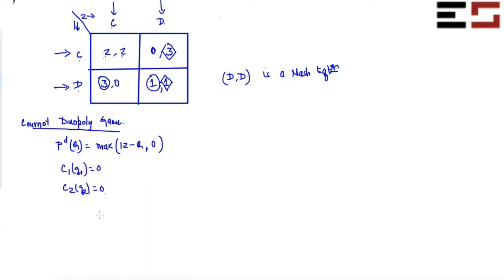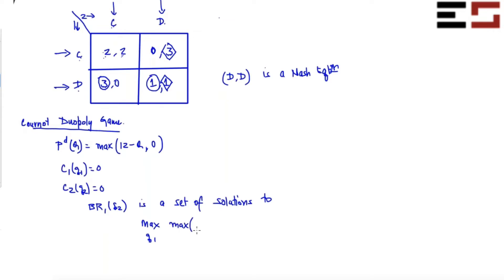Recall that in order to find the best response function BR1(Q2), it is a set of solutions to this problem: maximize with respect to Q1 the profit of firm one. The profit of firm one is max(12 minus Q1 minus Q2, 0) times the quantity, minus the cost which is 0. So you just have to maximize this, and you can choose any non-negative quantity.